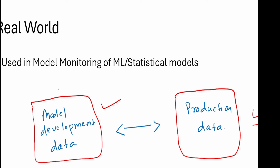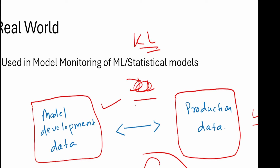If you built a model on historical data five or ten years back, that model may no longer be good, and one way to assess it is by checking the stability of the data by calculating the KL divergence. People also use PSI, which is symmetric in nature — from A to B equals B to A — which is not the case with KL divergence. In the real world it may not make much practical difference, but both KL divergence and PSI can be used in model monitoring.